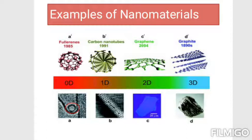Here are examples of nanomaterials. The first example of zero-dimensional nanomaterials is fullerene, first discovered in 1985. The second example of one-dimensional nanomaterials is carbon nanotubes (CNT), discovered in 1991. The third example of two-dimensional nanomaterials is graphene, discovered in 2004. The last example of three-dimensional nanomaterials is graphite, known since the 1890s.